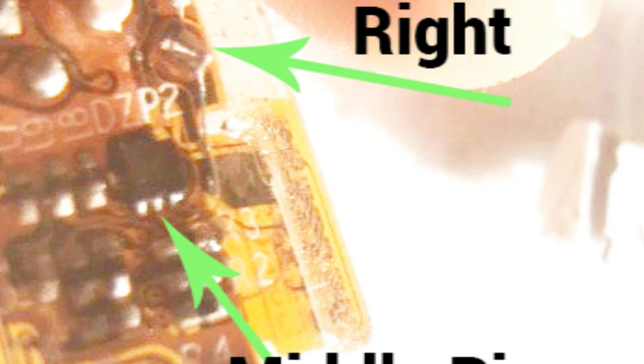Just solder this point on top here, where I pointed it to, with a really small cable to the middle pin of the IC or to the trace on the PCB. And your headphone or your speakers should be fixed, your output should be fixed. In my case it fixed the problem.